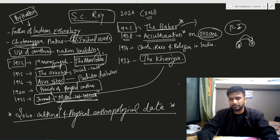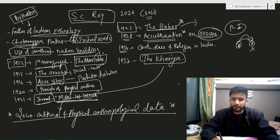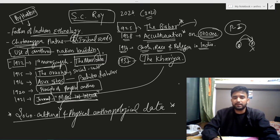In 1935 or 1934, his interest changed and he went to understand caste, race, and religion in India. In 1937, he studied the community called Kharia.